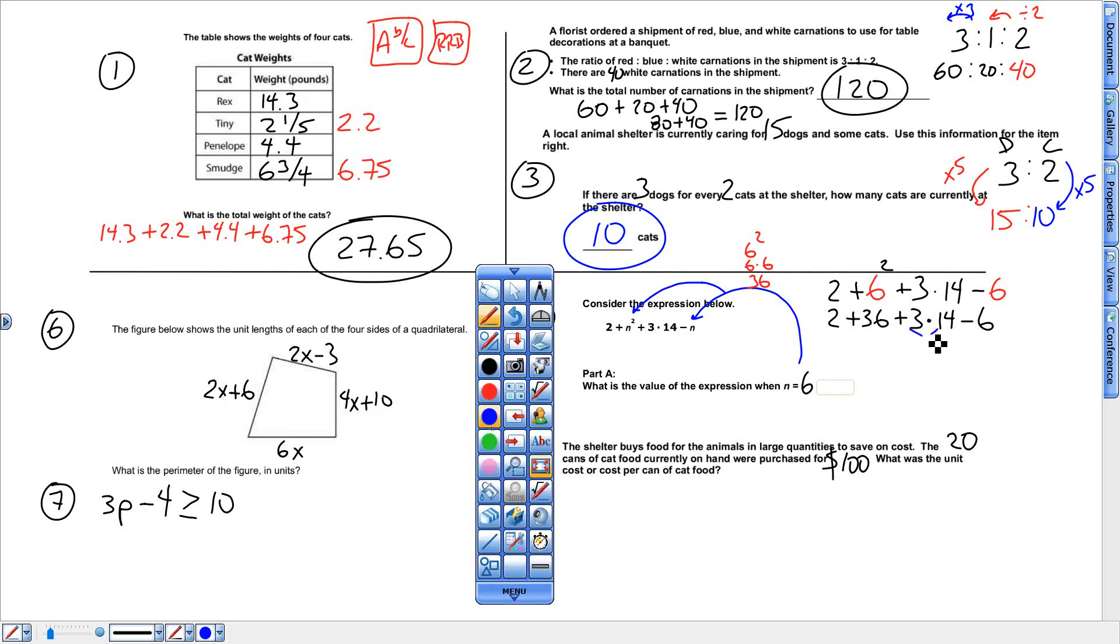So 3 times 14 gives me 42. Leave the rest alone. 2 plus 36 plus 42 minus 6. Now go left to right. 2 plus 36 is 38, plus 42 minus 6. 38 plus 42 gives me 80, minus 6 gives me 74.